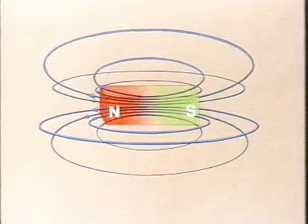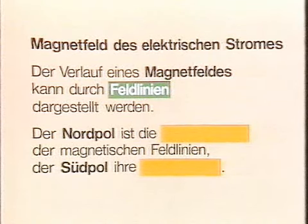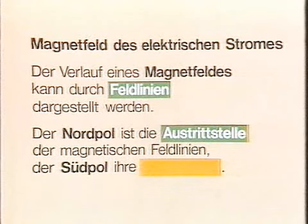Wir fassen zusammen. Unser heutiges Thema lautet Magnetfeld des elektrischen Stromes. Zunächst einmal haben wir ein paar Grundtatsachen des Magnetismus zusammengestellt. Der Verlauf eines Magnetfeldes kann durch Feldlinien dargestellt werden. Der Nordpol ist die Austrittstelle der magnetischen Feldlinien.